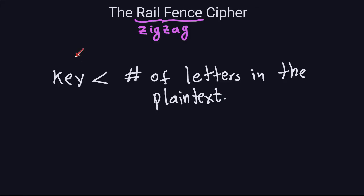The reason is because if you choose a key that is bigger, something not desirable is going to happen. So I'm going to show you an example where the key is larger than the number of characters in the plaintext, and we'll see how the zigzag cipher is going to work in that case.